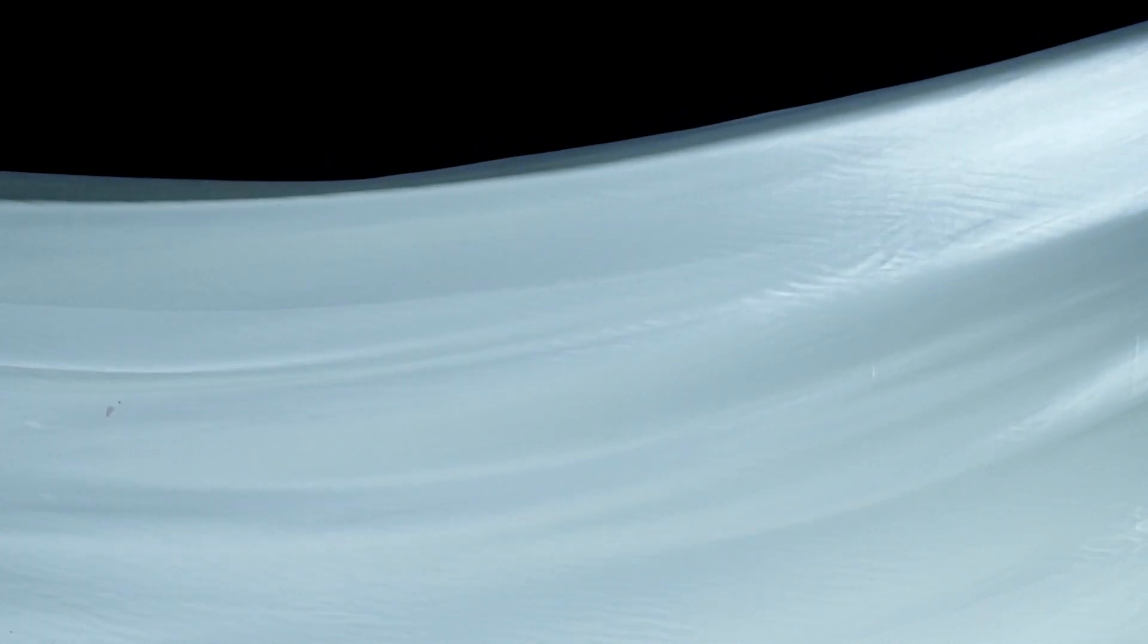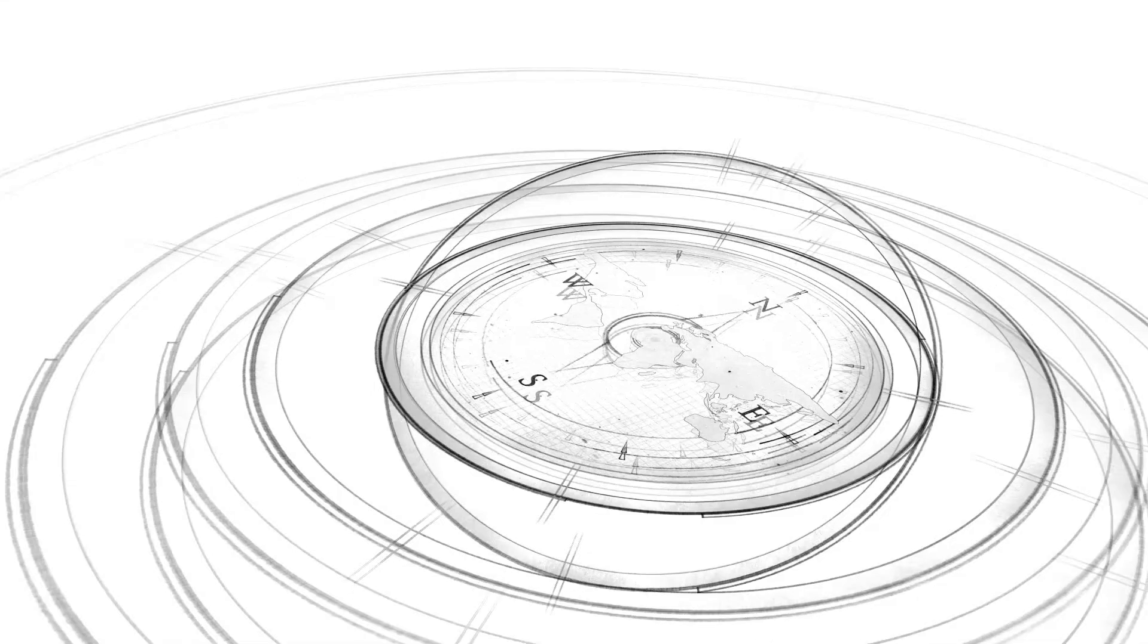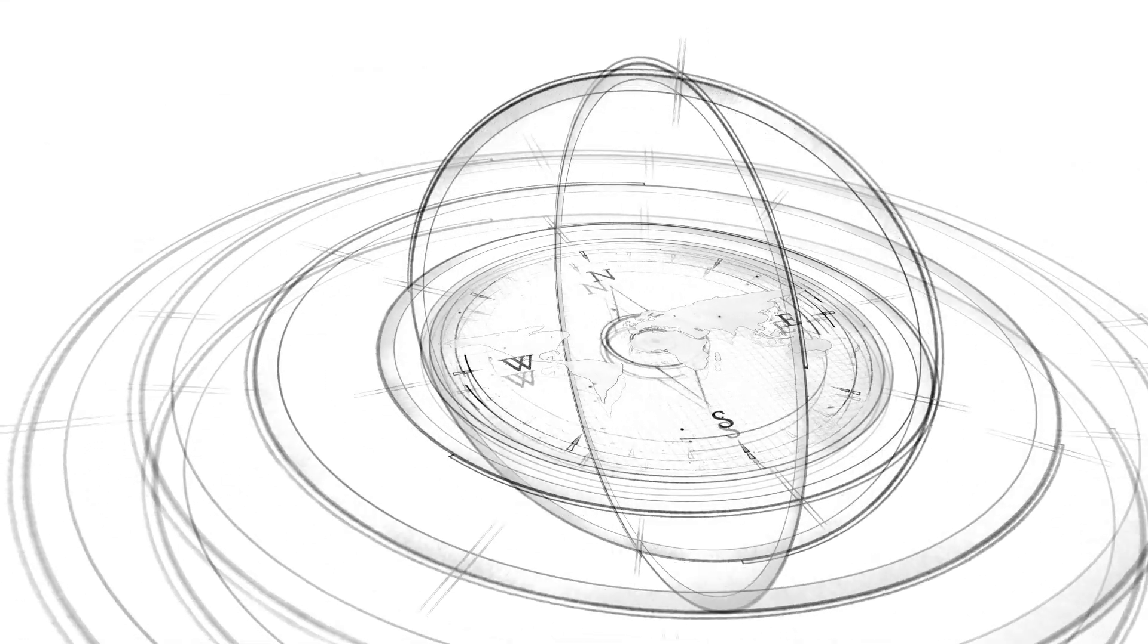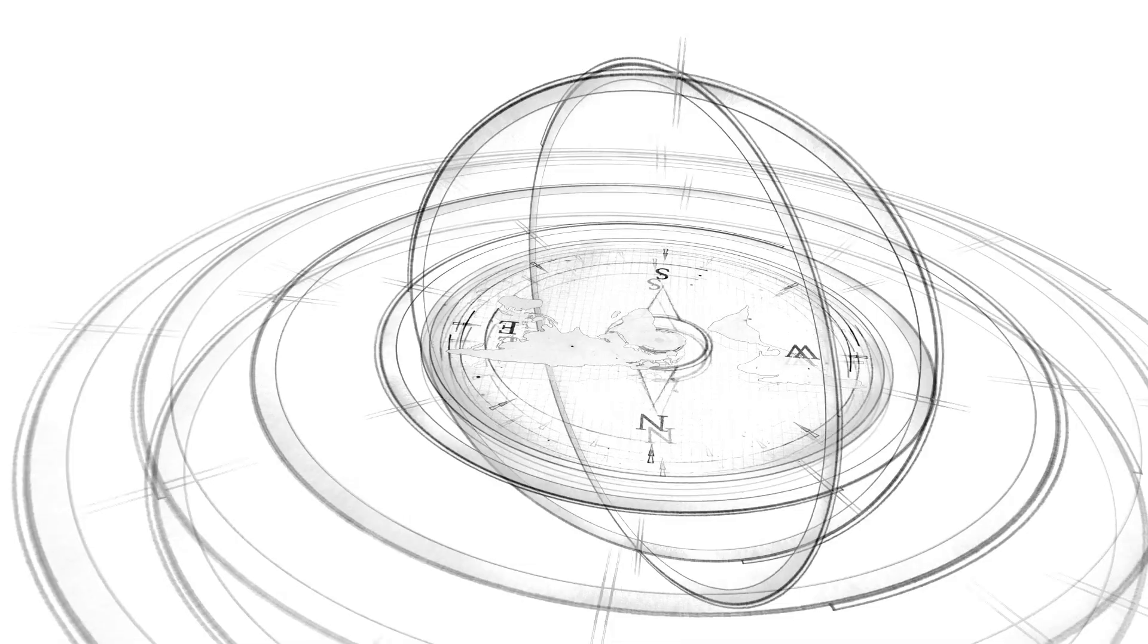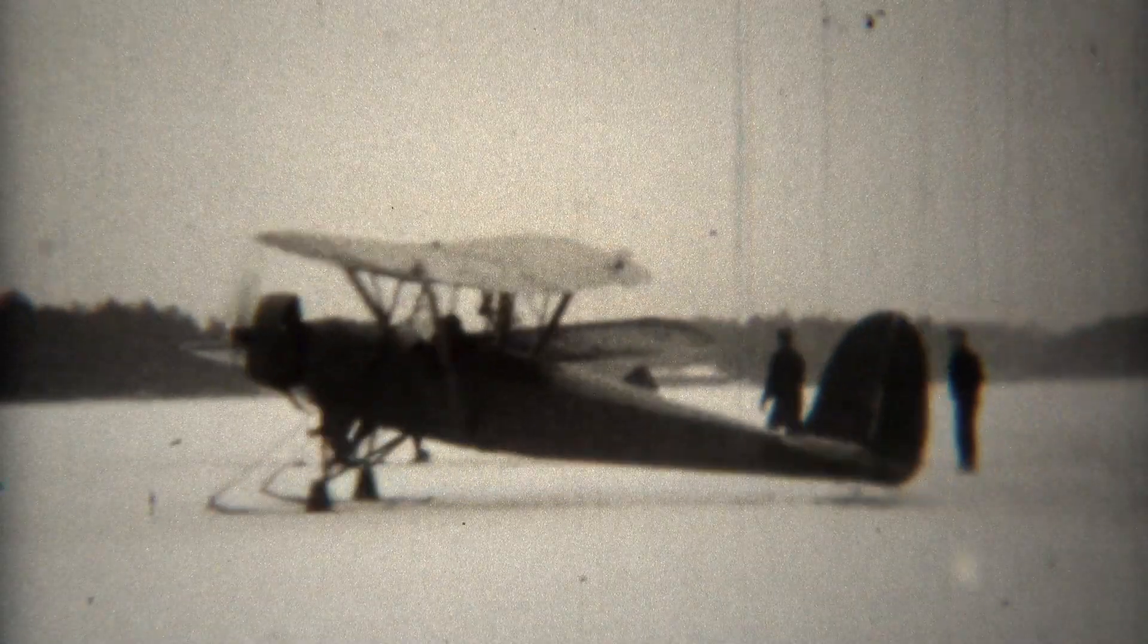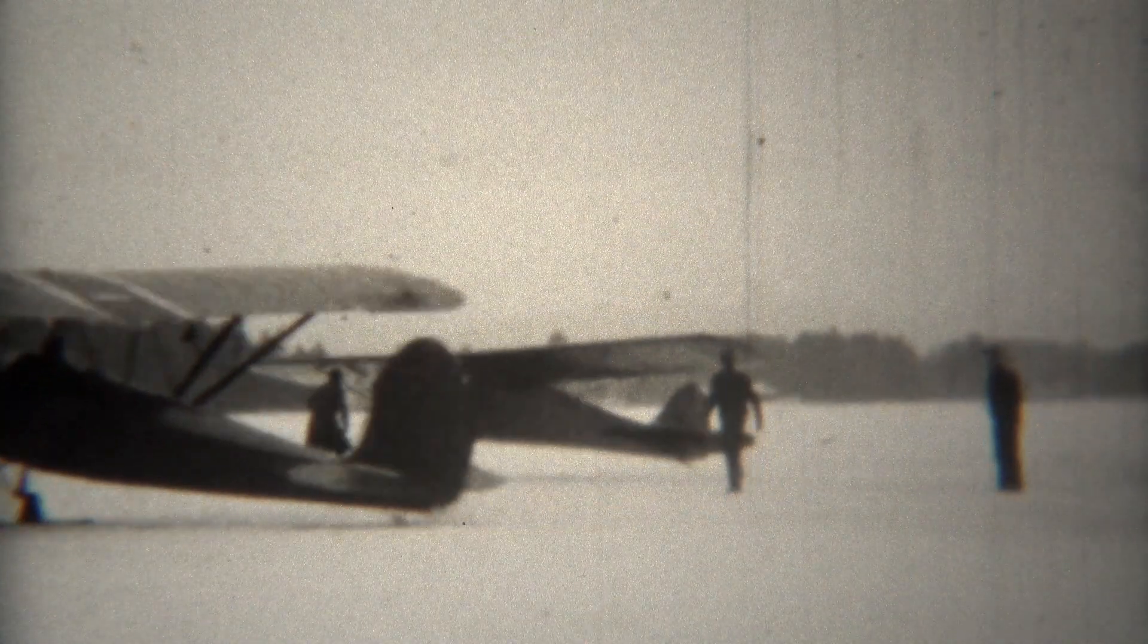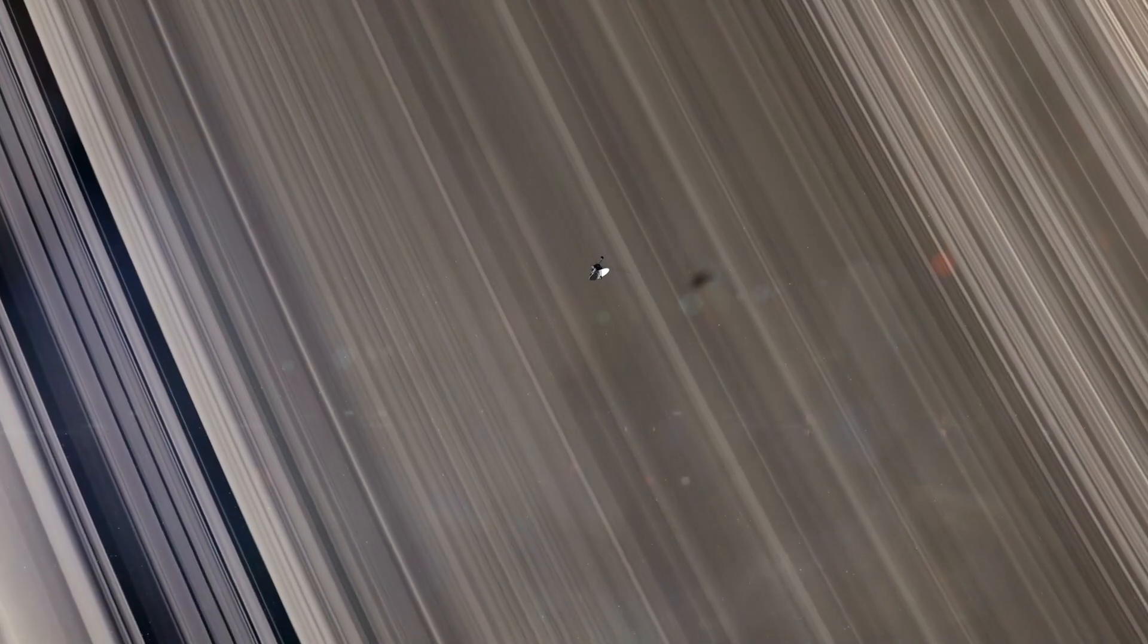One of the most striking features in the JWST images is Neptune's rings, which are prominently displayed. While Neptune's rings are not typically visible in most renderings, these new images confirm previous findings. Neptune's first ring was detected in 1968, but it wasn't until the Voyager 2 flyby that astronomers could confirm the existence of multiple rings. Three decades later, JWST images clearly reveal Neptune's rings and faint dust bands.